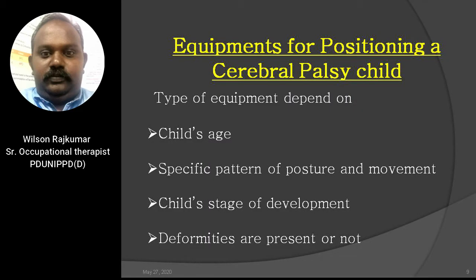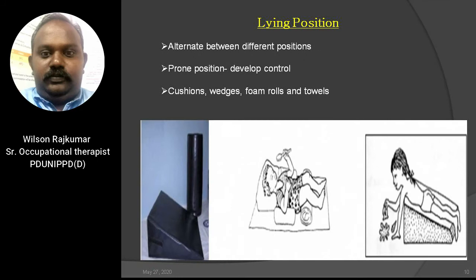Various equipment are provided for positioning a cerebral palsy child. The type of equipment chosen should depend on the child's age, the specific pattern of posture and movement, the child's stage of development, and whether deformities are present. If the child is predominantly in a lying position, alternate between side lying, supine, and prone positions to prevent pressure areas and body stiffness. The prone position is especially good for developing control of the shoulder, arms, and hands, and also stretches the muscles of the hips, knees, and shoulder. Equipment includes cushions, wedges, foam rolls, and towels.